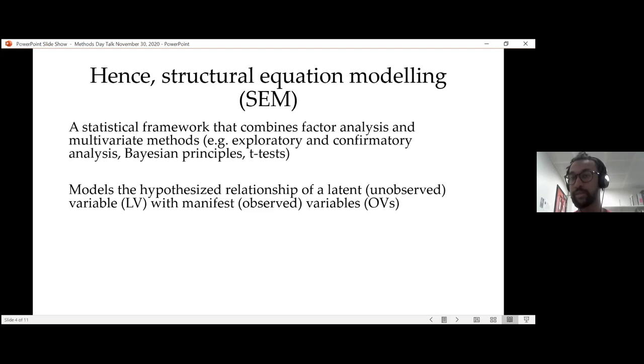You model its relation to other manifest or observed variables. For example, your latent variable could be general intelligence, which I'll describe in a moment. And your manifest variable or observed variables that you actually do measure could be, for example, a score on a vocabulary or a math test or a cognitive test.